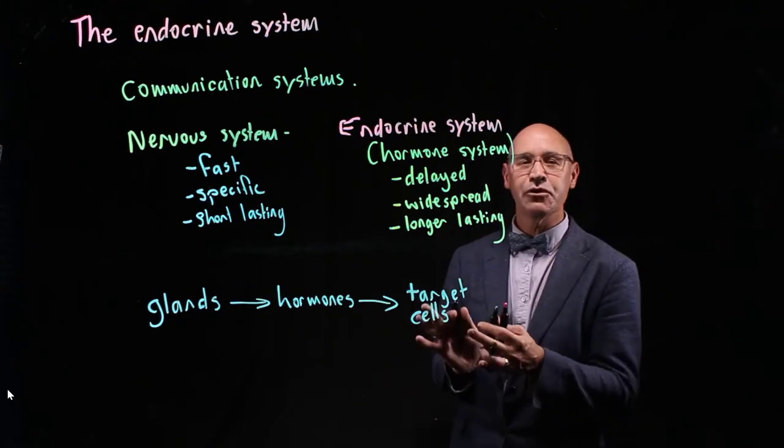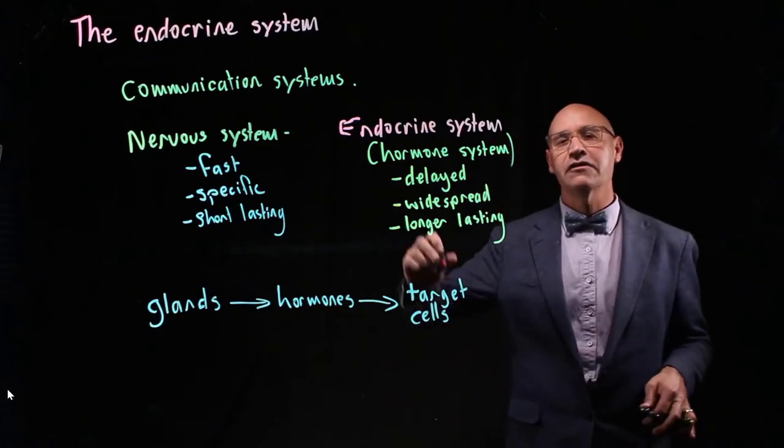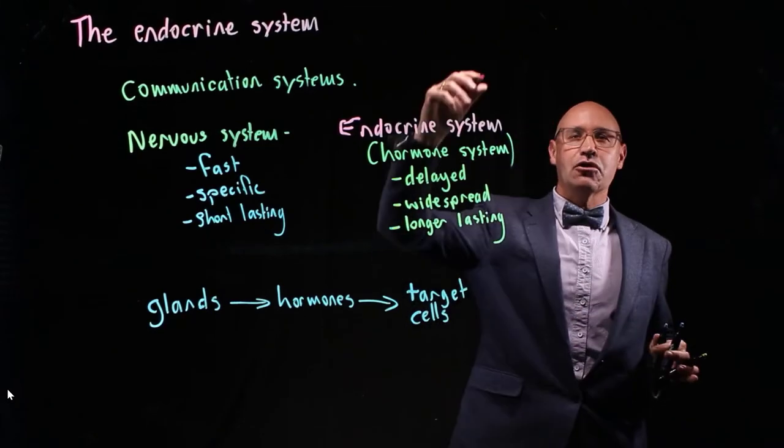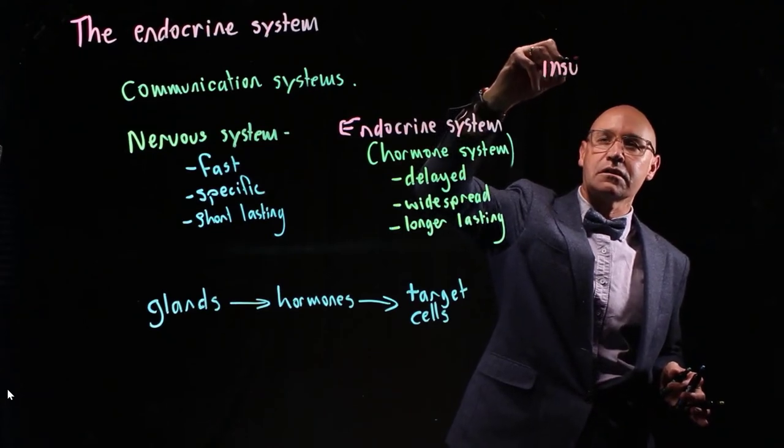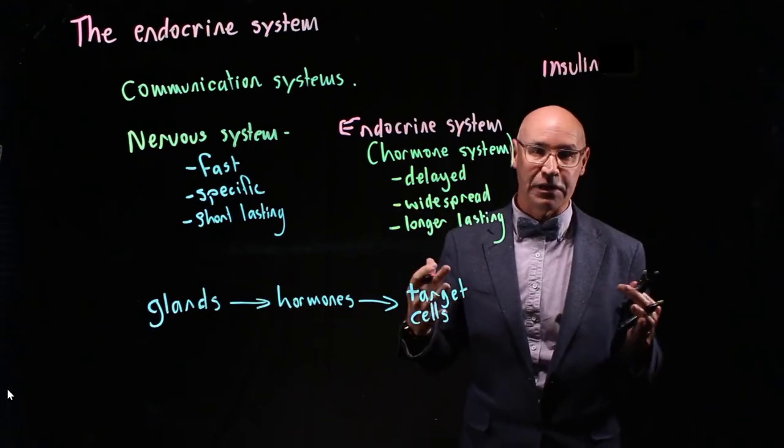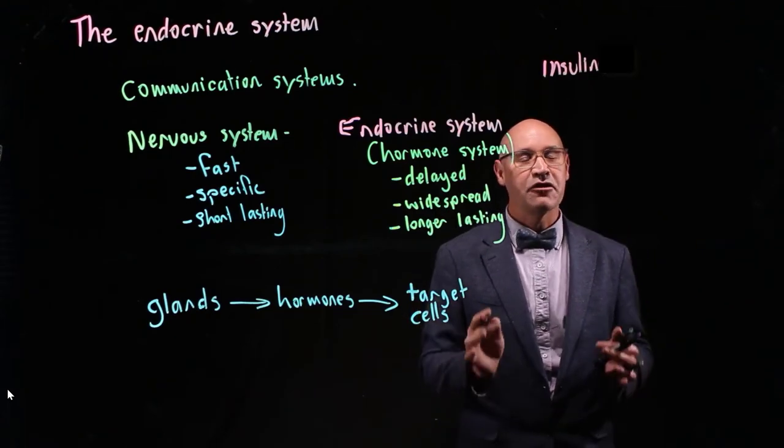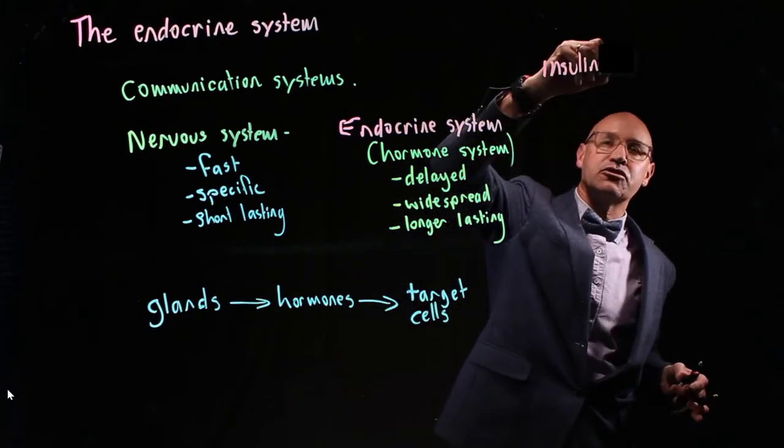Let's talk about a couple of different hormones. One that I'm sure you've heard of is called insulin. Insulin is a hormone that's involved in regulating blood sugar. It's produced by the pancreas. The pancreas is the gland that produces it.